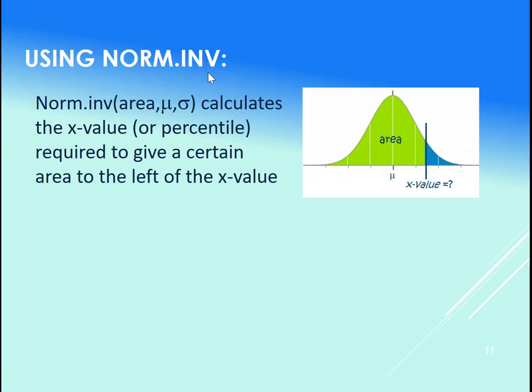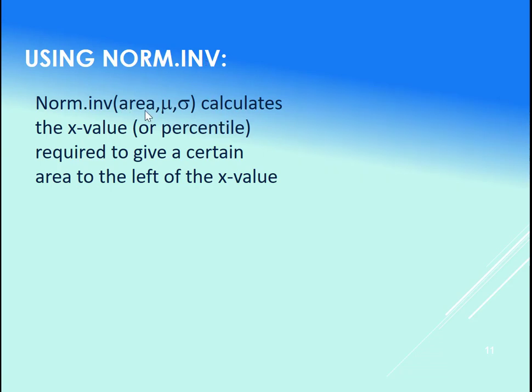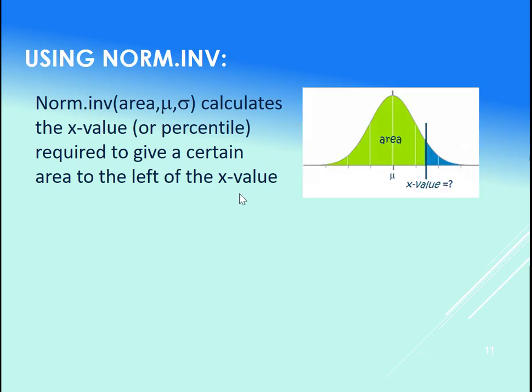Now let's examine Excel's NORM.INV call. The NORM.INV calculates the x-value, or percentile, required to give a certain area to the left of an x-value. Excel always works with the area to the left, so if we put in this area, it's going to give us the x value such that the area to the left of that x value is whatever we plugged in.